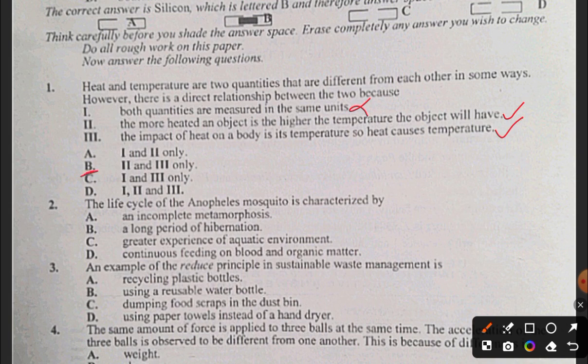Question 2: The life cycle of the anopheles mosquito is characterized by: A) incomplete metamorphosis, B) a long period of hibernation, C) greater experience of aquatic environment, D) continuous feeding on plants and organic matter. The answer to question two is C.